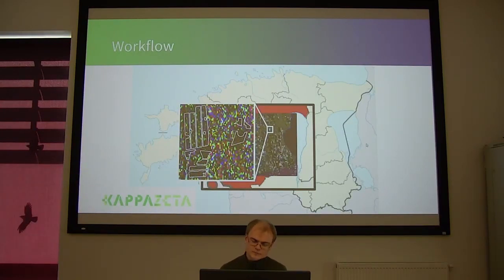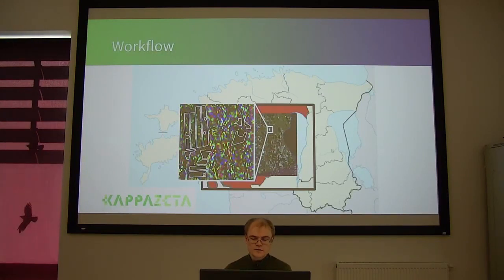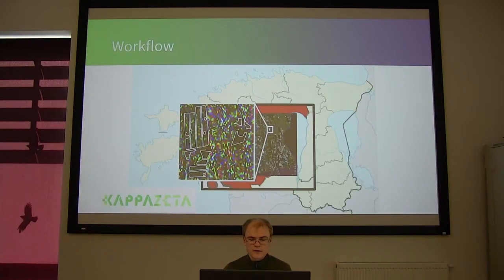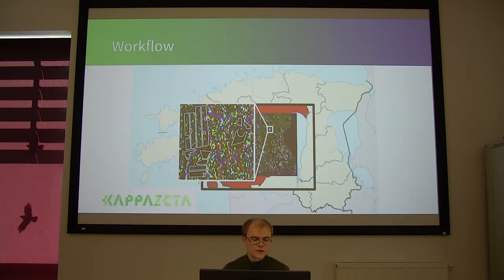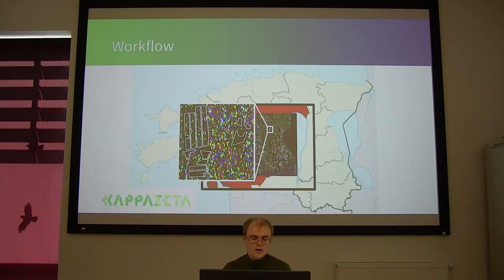The raster image that describes this whole region can be in the order of many hundreds of gigabytes. Each of those pixels on this zoomed-in image corresponds to a 4 by 4 area. So you can imagine how many pixels there are for the whole of Estonia and how large the raster image is. You can't just load this whole raster image into your computer and do the statistical analysis there.